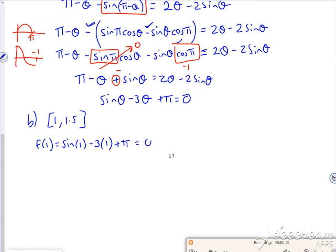According to the pack, that's 0.983. And then f of 1.5 is sine of 1.5 in radians, 3 lots of 1.5 plus π, and that gives me minus 0.3609.